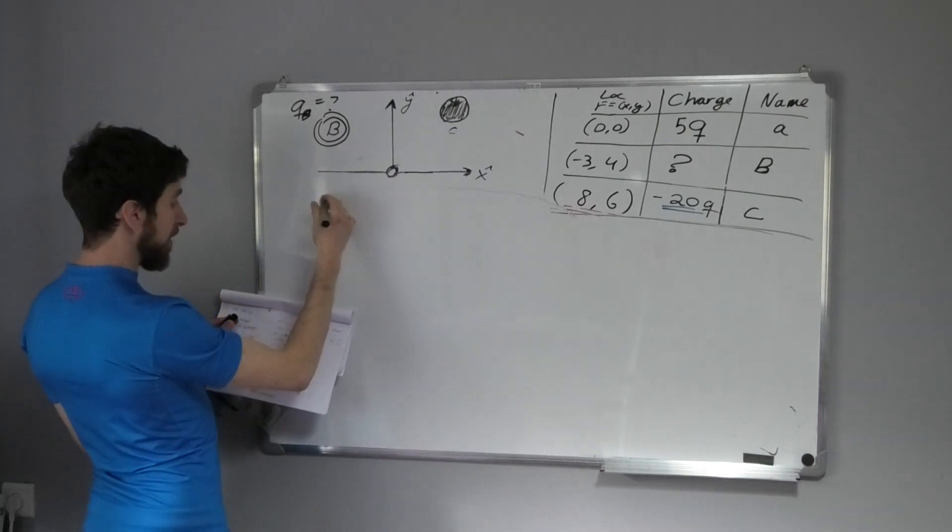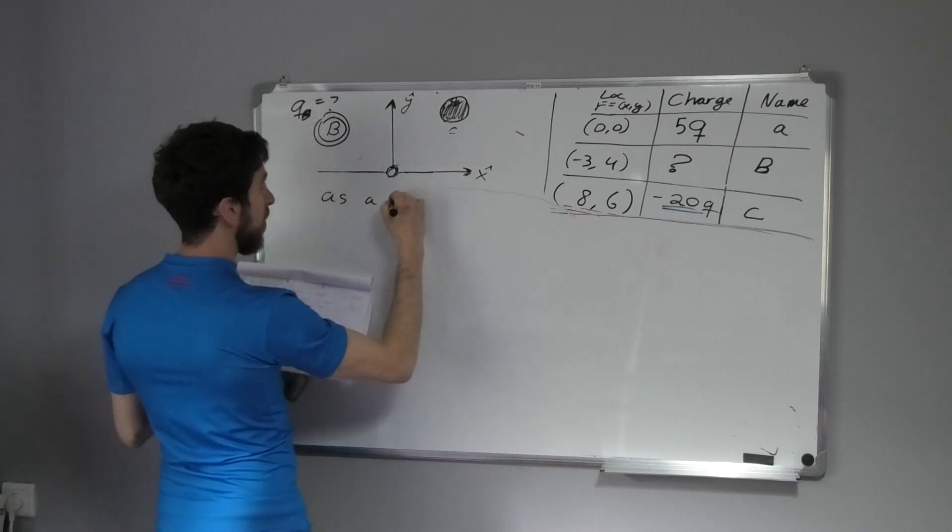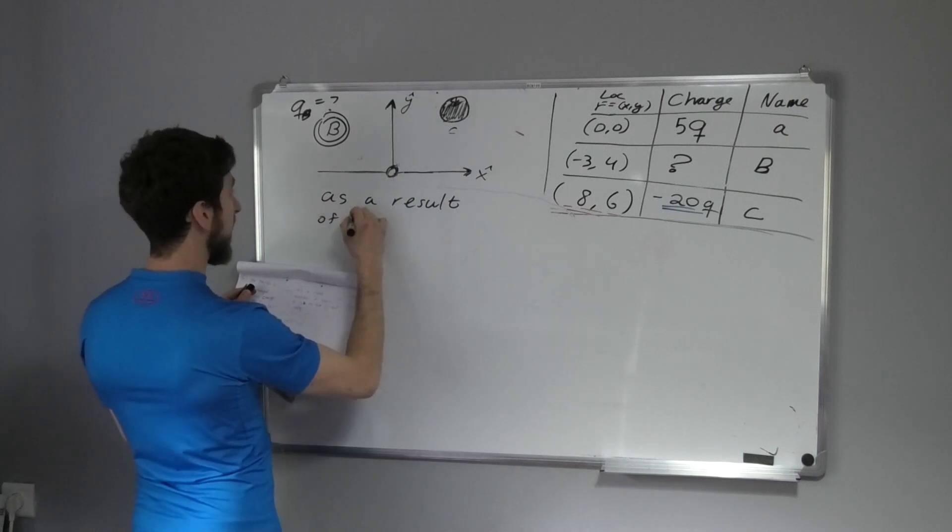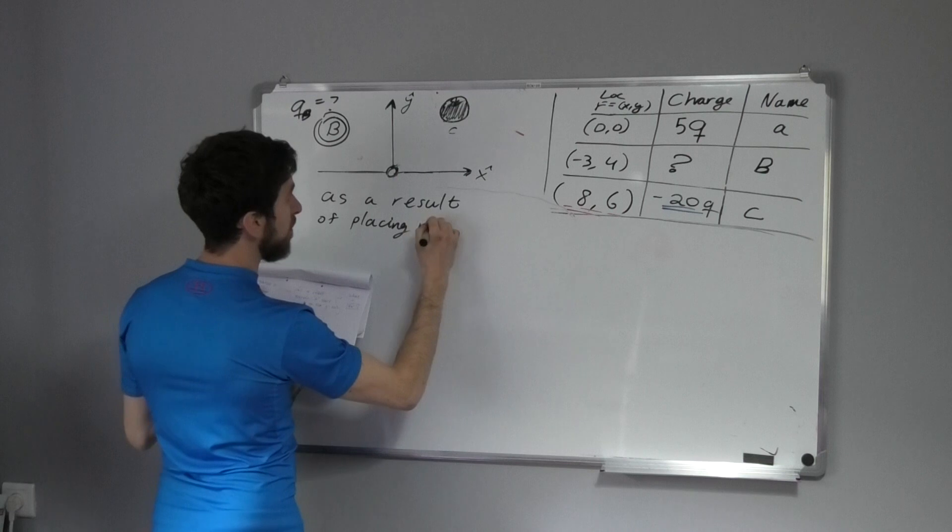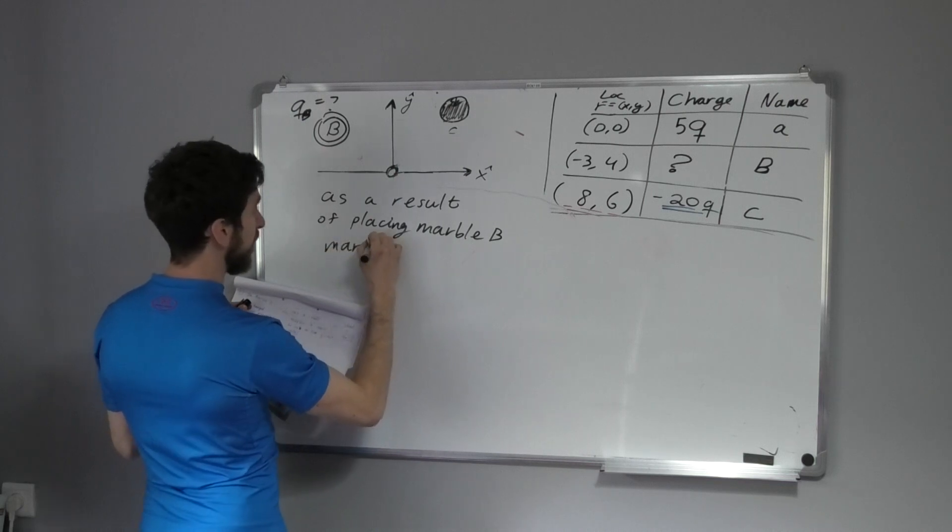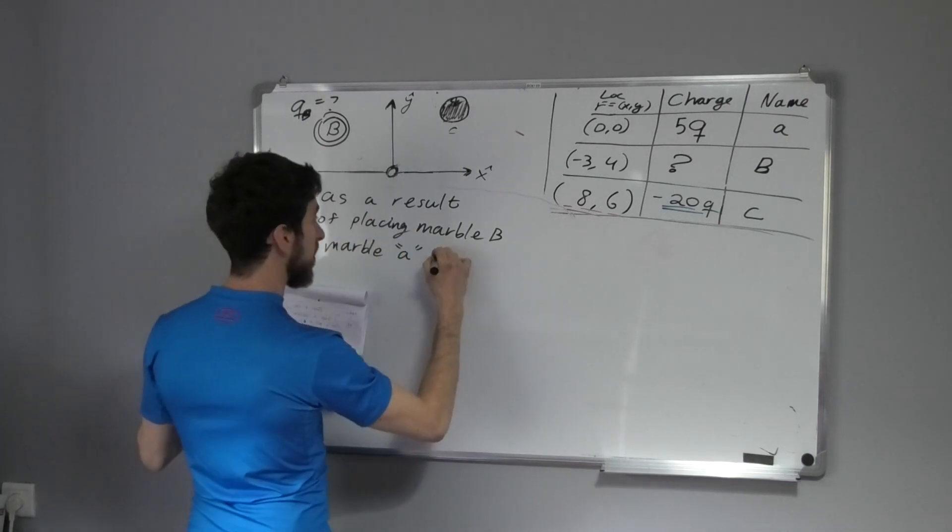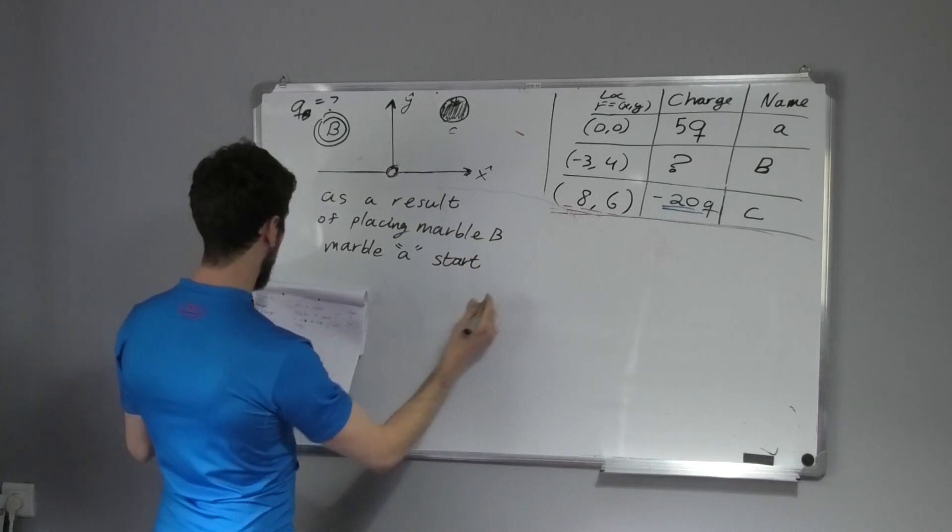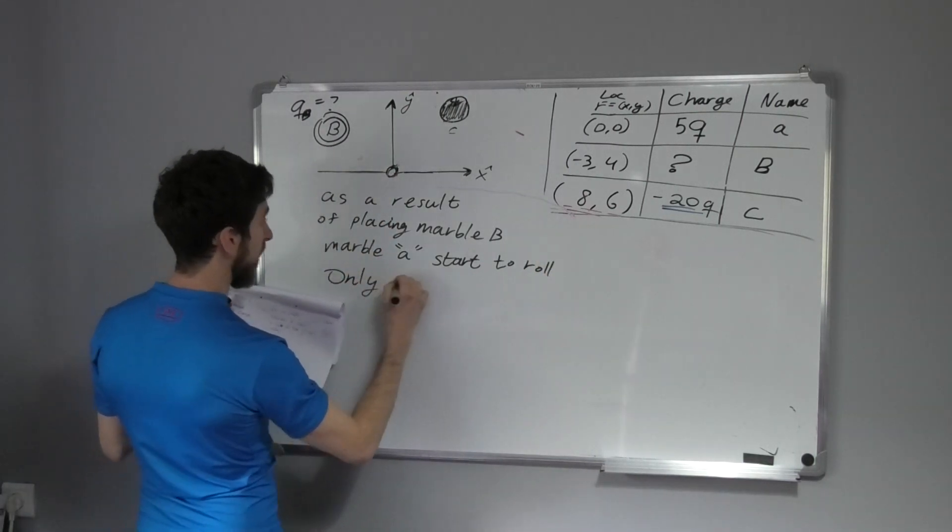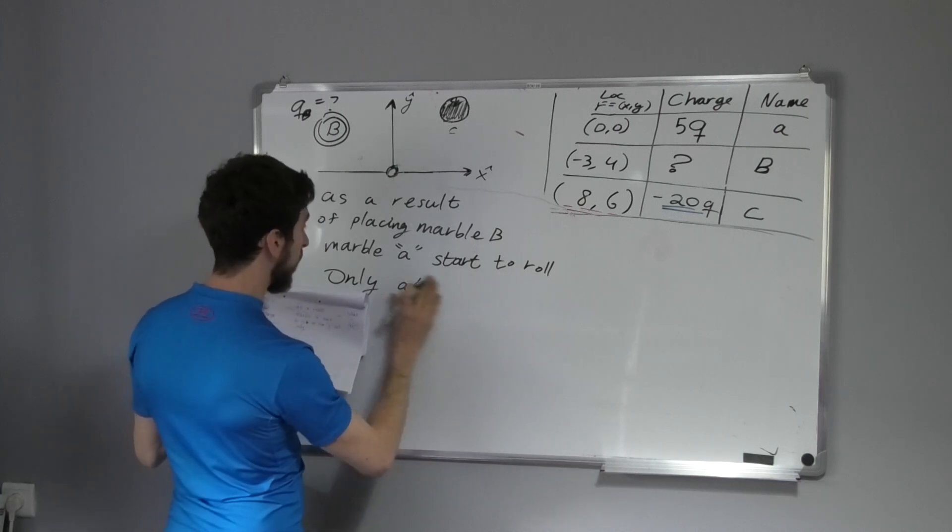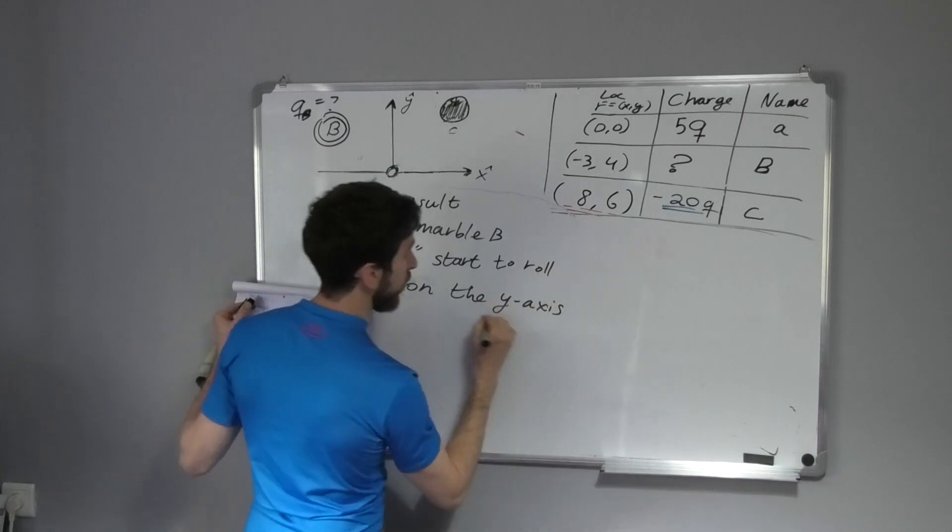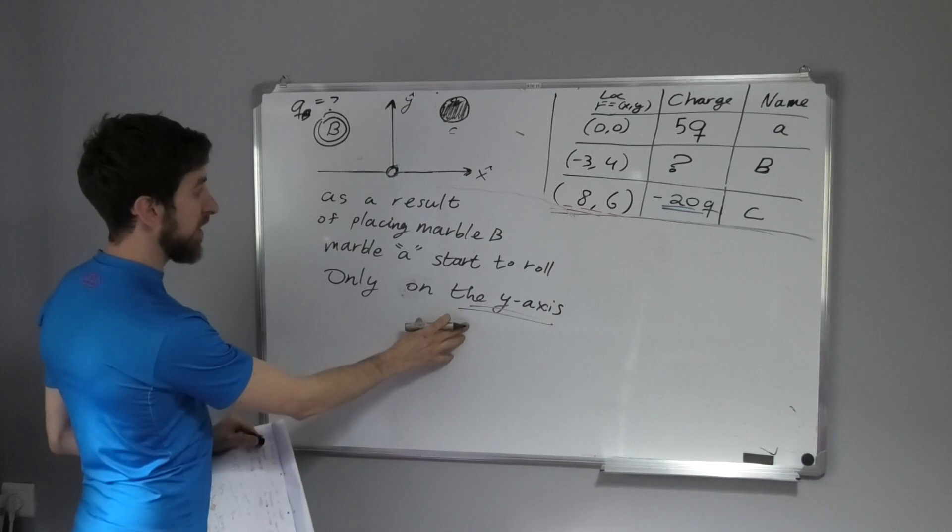What they're telling me is that as a result of placing marble B, marble A starts to roll only on the y-axis.